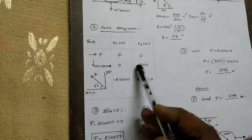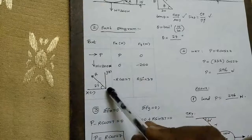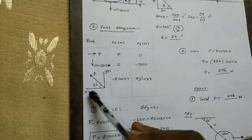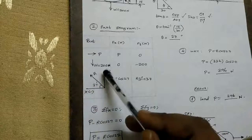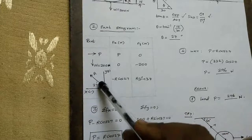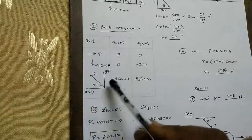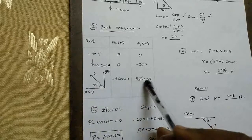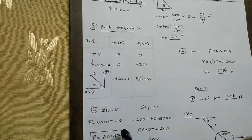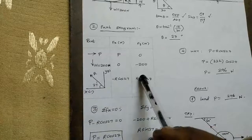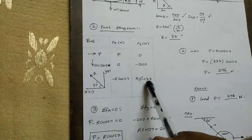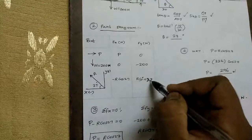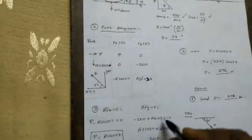Now for reaction R at 27 degrees: the X value is negative and Y value is positive. So the X component is R cos 27 and Y component is R sin 27. Note: 37 is a spelling mistake — the correct angle is 27 degrees.